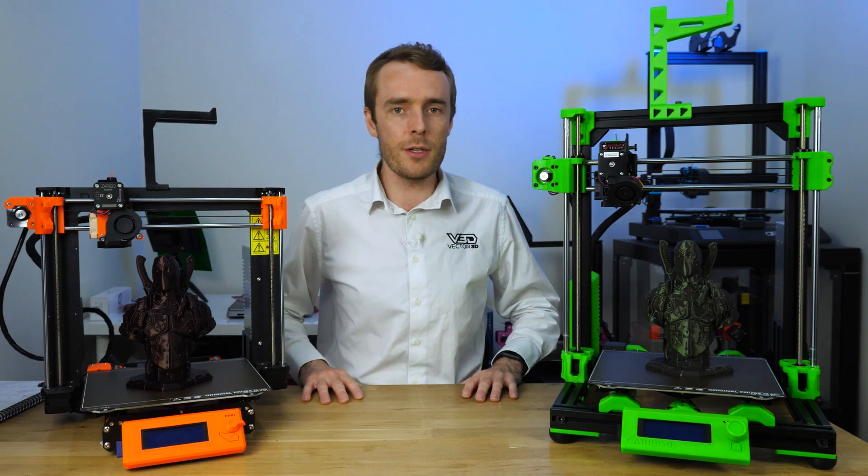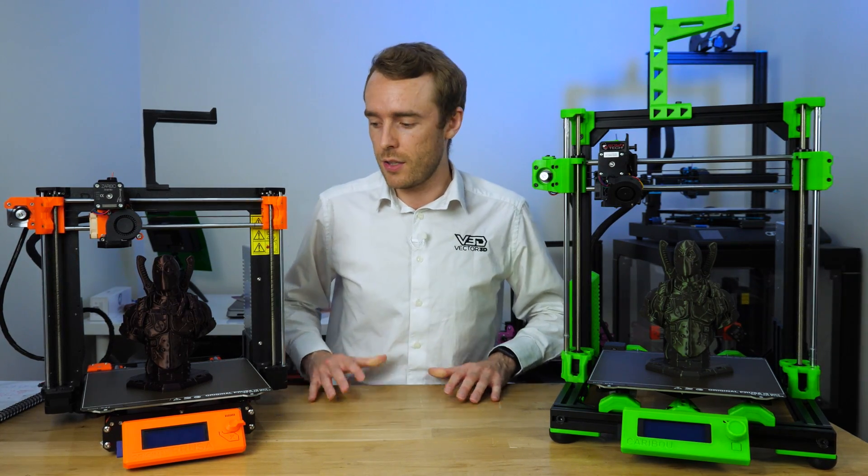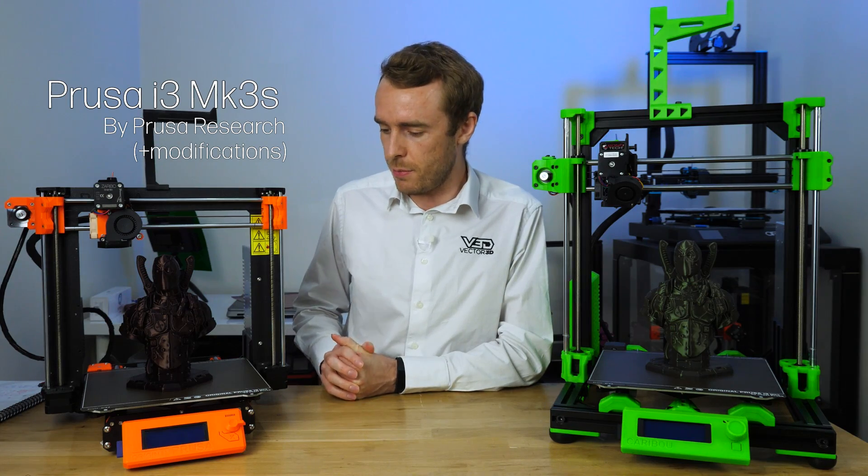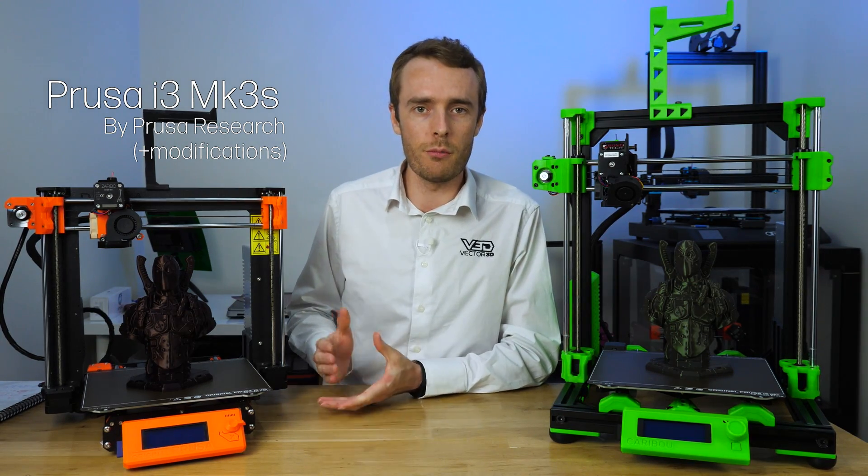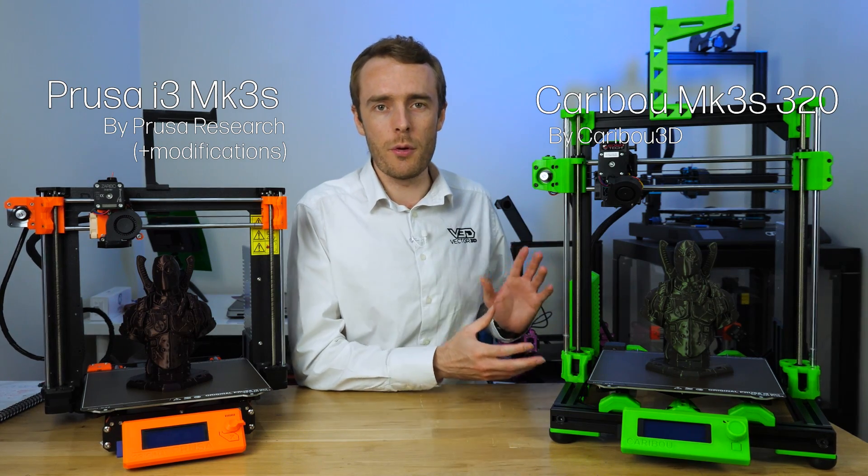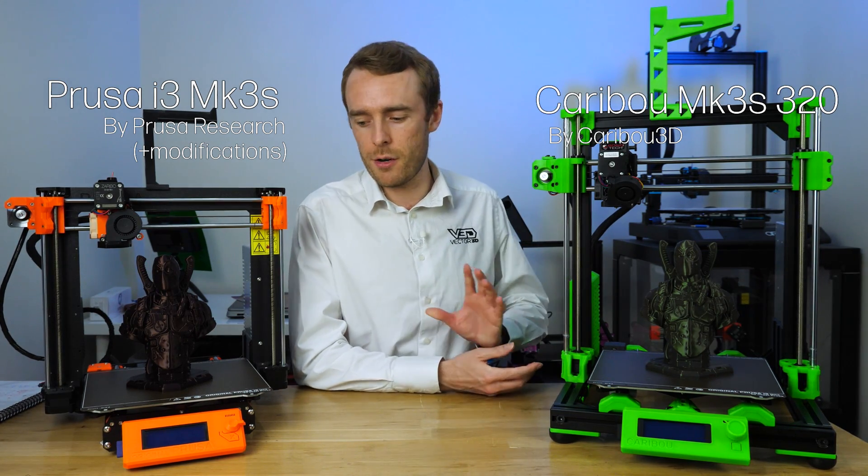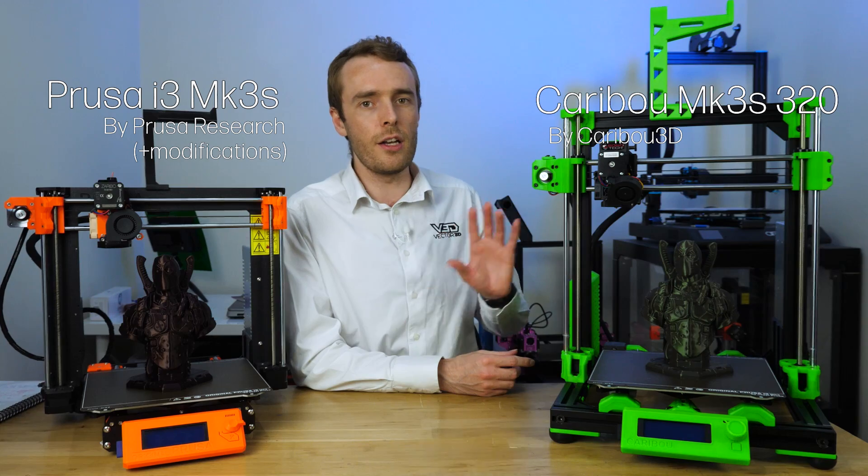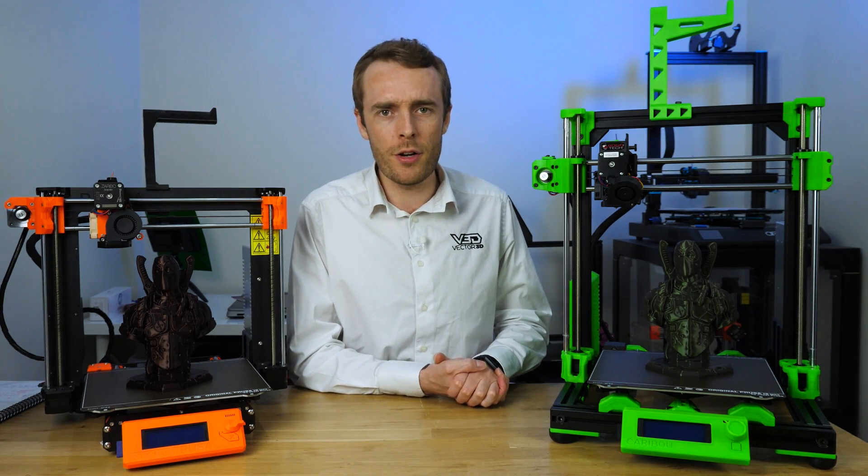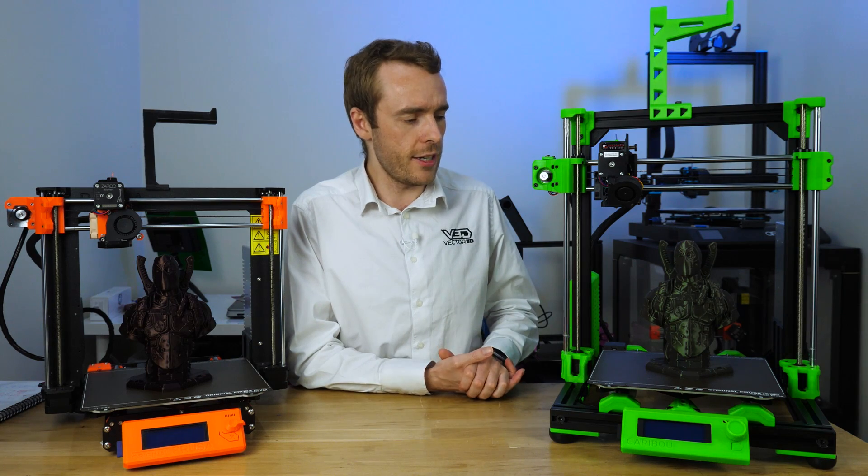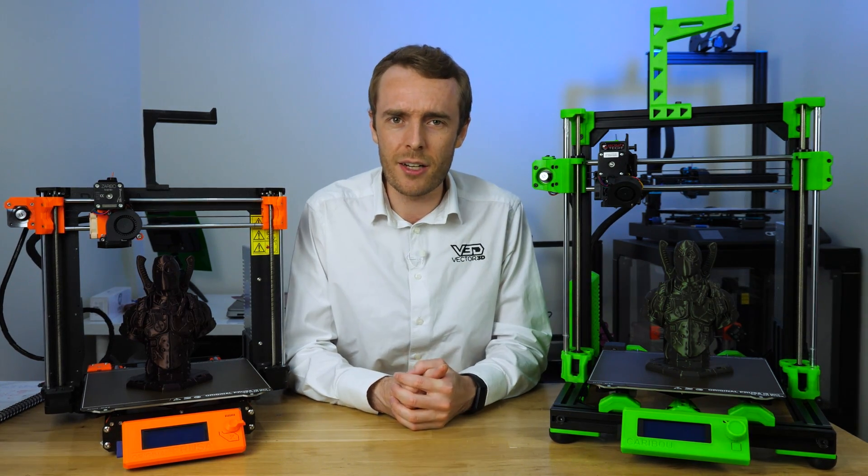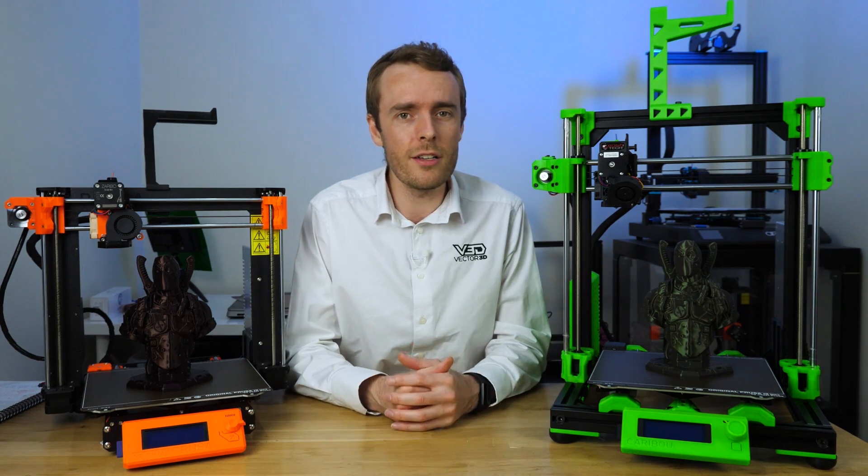As you can see, these two printers in front of me do look rather similar. This original Prusa i3 MK3S by Prusa Research is basically the original design from Prusa. And this one on my left is the Caribou MK3S320. This is very much based on the Prusa but with a large number of modifications. But just because it's modified and changed and really quite different in nearly every single way, does that necessarily make it better? Well there's only one way to find out.